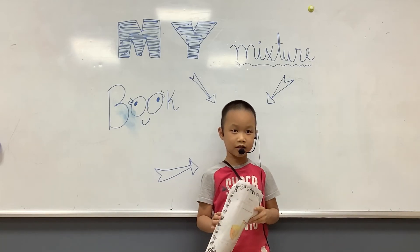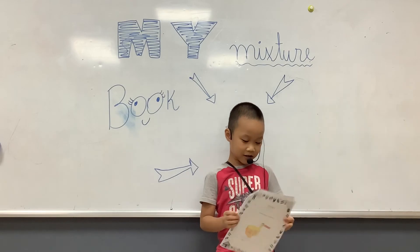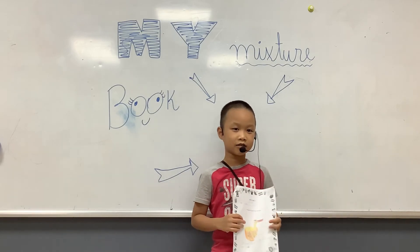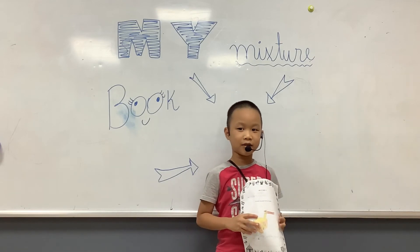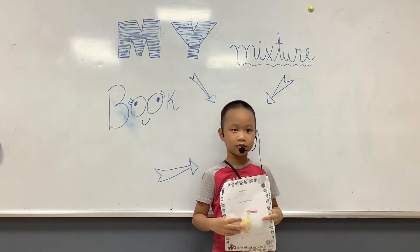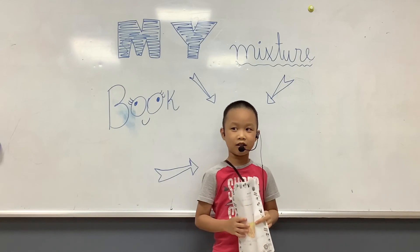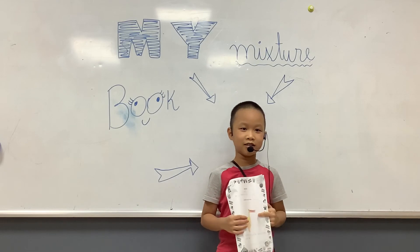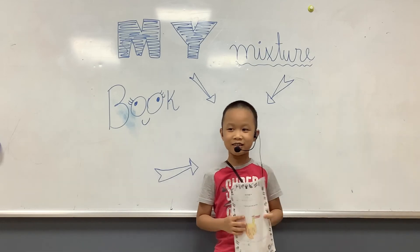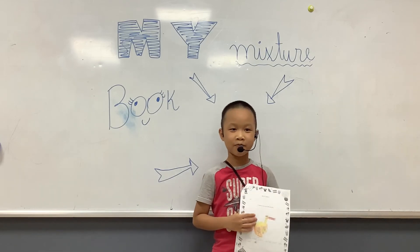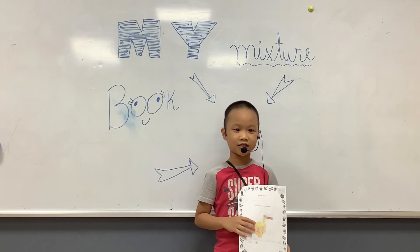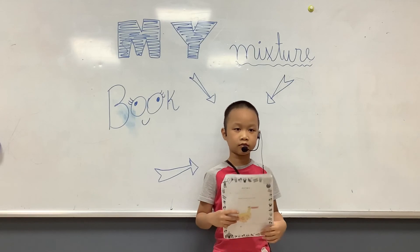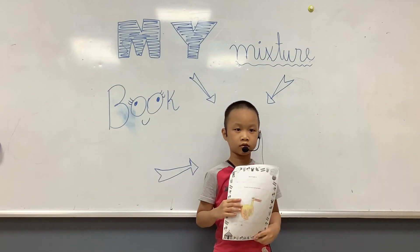What mixture do you like the most? I like mixture 1. What is mixture 1? It's the pizza. Why do you like pizza? Because I like sausages and pizza has many sausages. And is pizza a liquid? Pizza is a solid.